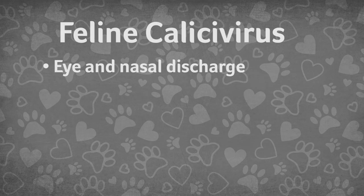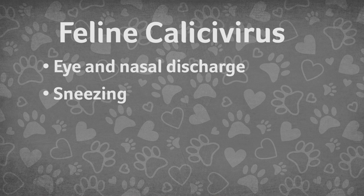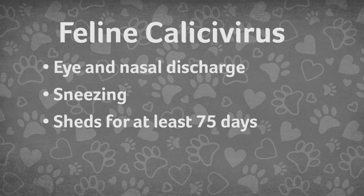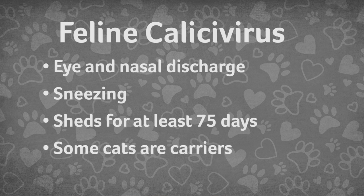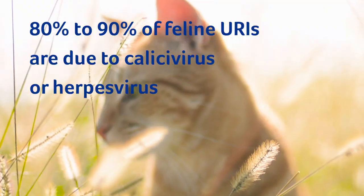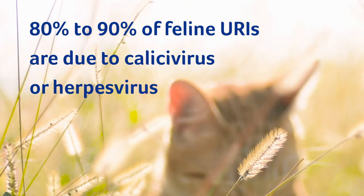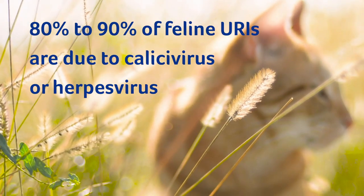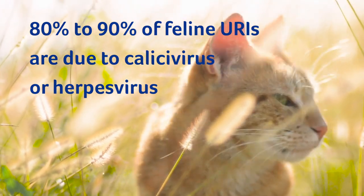Another cause of URIs in cats is calicivirus. Eye and nasal discharge and lots of sneezing are typical indications of calicivirus. The incubation period for calicivirus is five days, but it sheds for at least 75 days after recovery. Like herpes, some cats can be carriers. Calicivirus is a very infectious viral respiratory disease — around 80 to 90 percent of all feline respiratory disease is due to feline calicivirus or feline herpes virus.